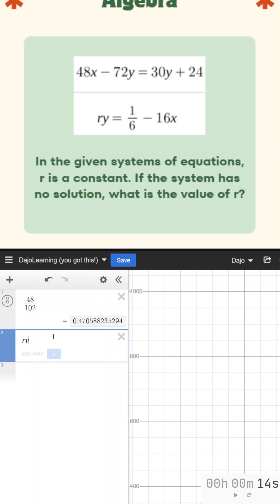Now if you look at the second one, we have ry equals 1 sixth minus 16x. So our slope is,